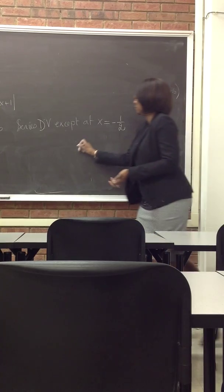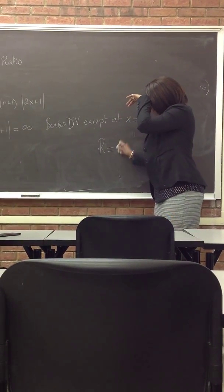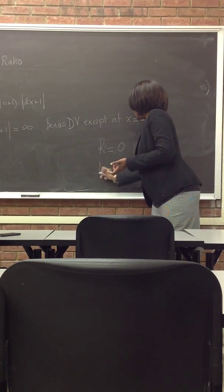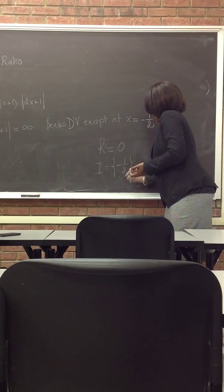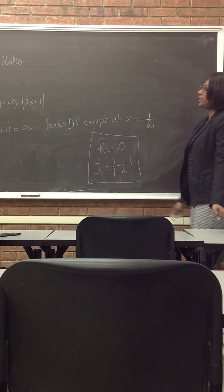So what is the radius? Zero. There is no interval, the radius is zero. And actually when it says interval, it just puts the value minus 1/2. It's just a set instead of an interval anymore, a set of just one number. It only converges at the center.